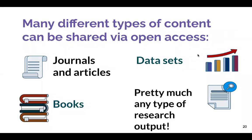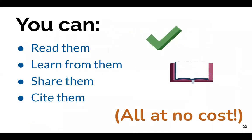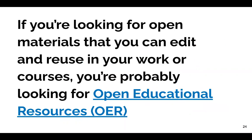Many different types of content can be shared through open access. Most commonly we think about journals and articles, but you can also share datasets, books, and pretty much any type of research output. With open access materials, you can read them, learn from them, share them, and cite them all at no cost, but you can't generally edit, change, or reuse the content in your own work without explicit permission. If you're looking for materials with more open licensing that allow editing and reuse, you might be thinking about open educational resources, which are generally licensed with more permissive licenses — but make sure you're clear on what the author is allowing.